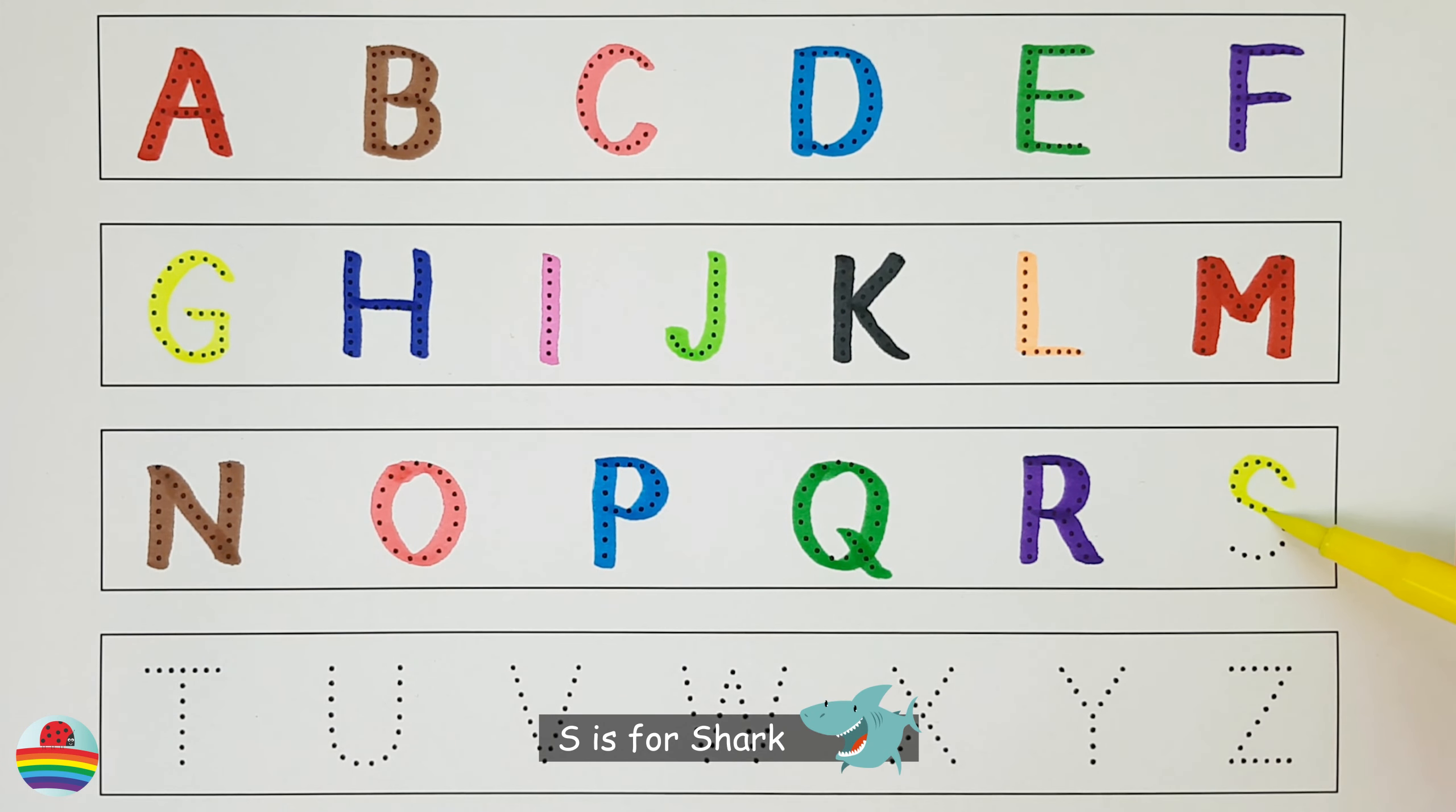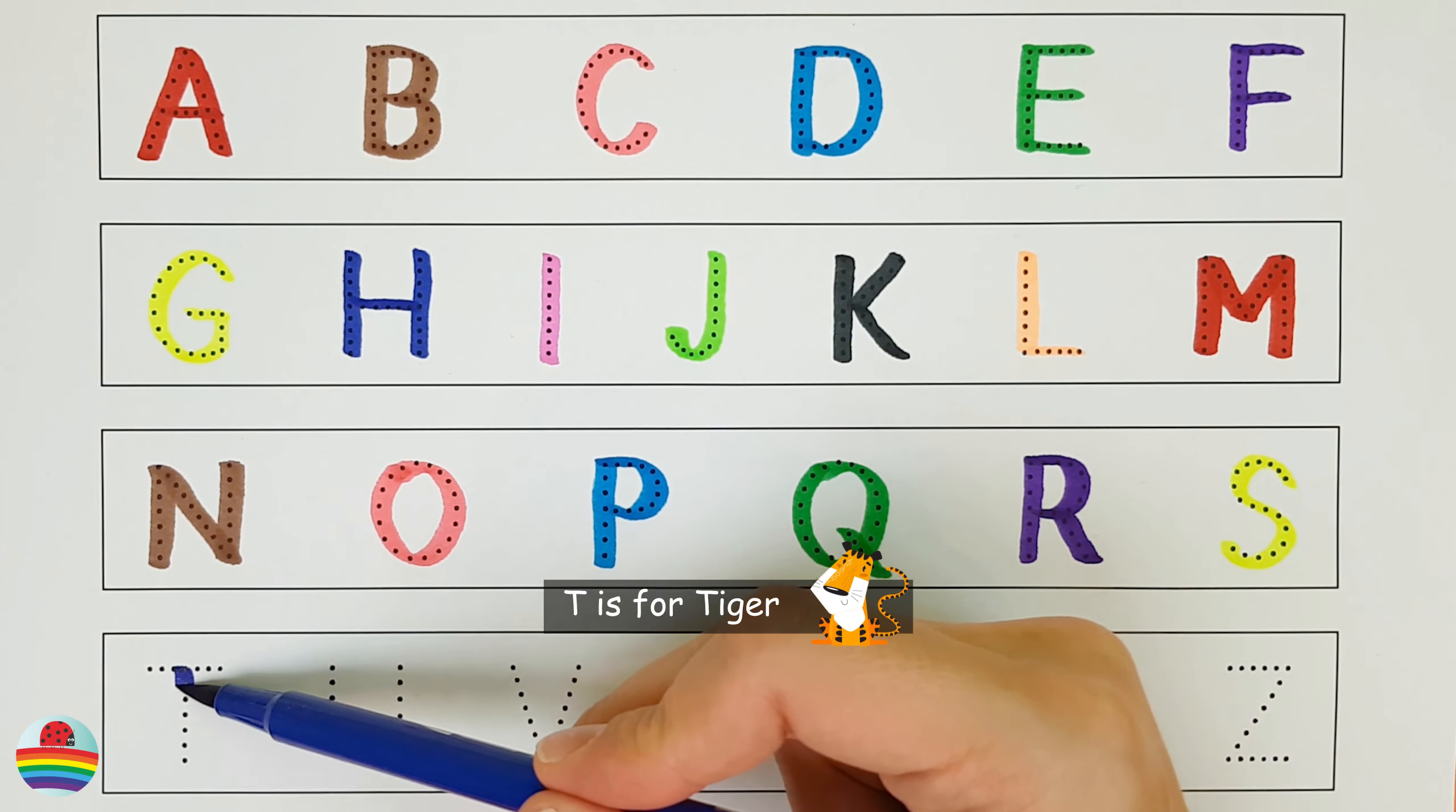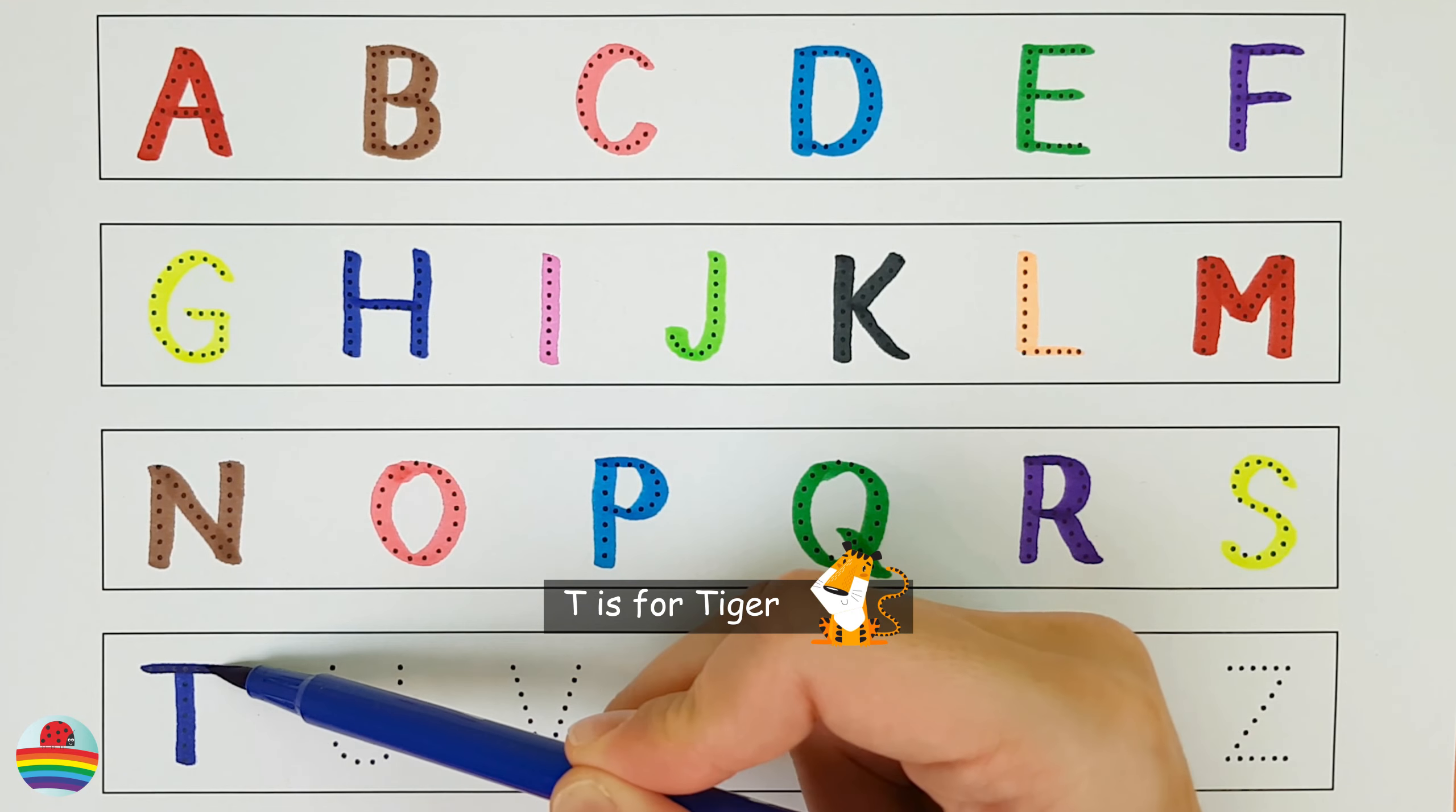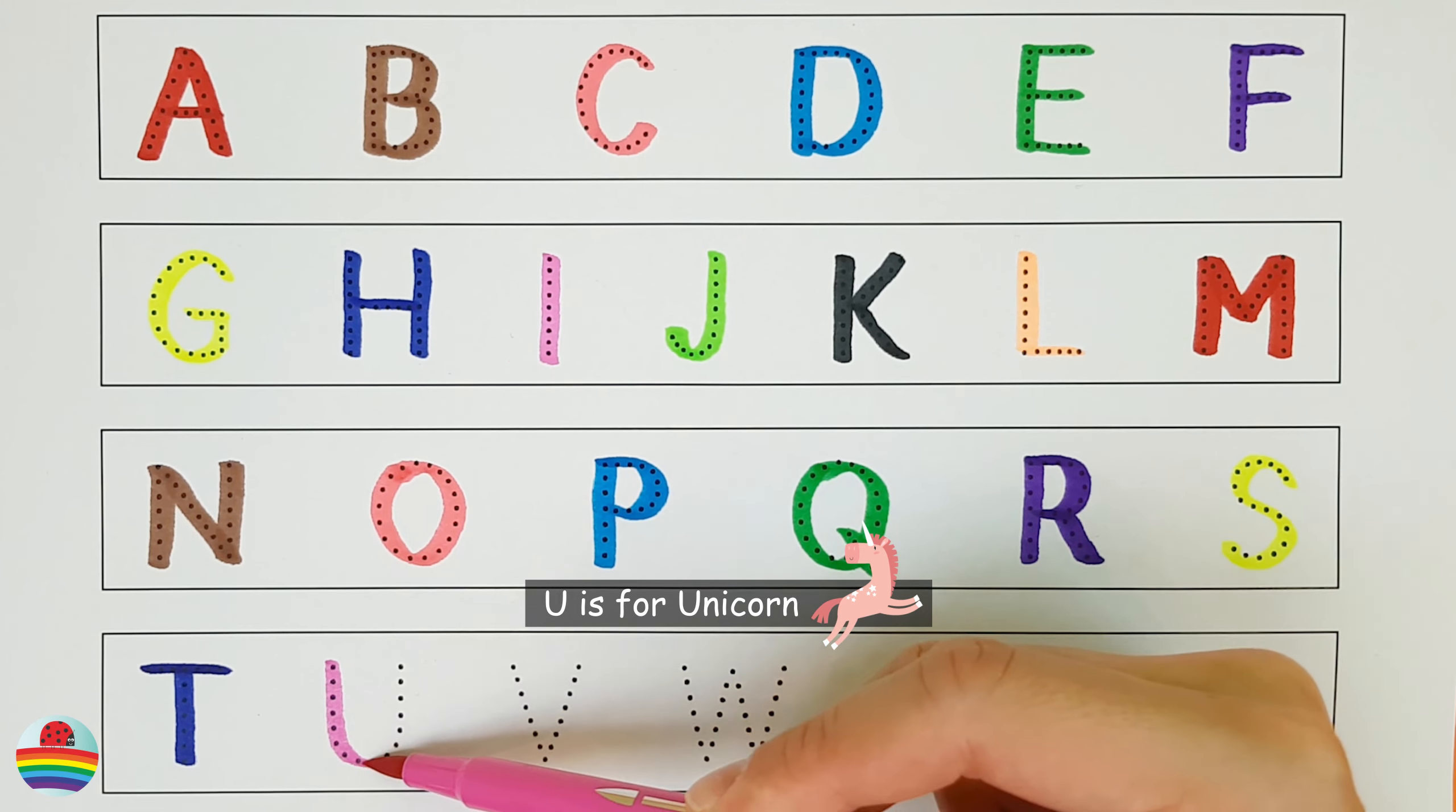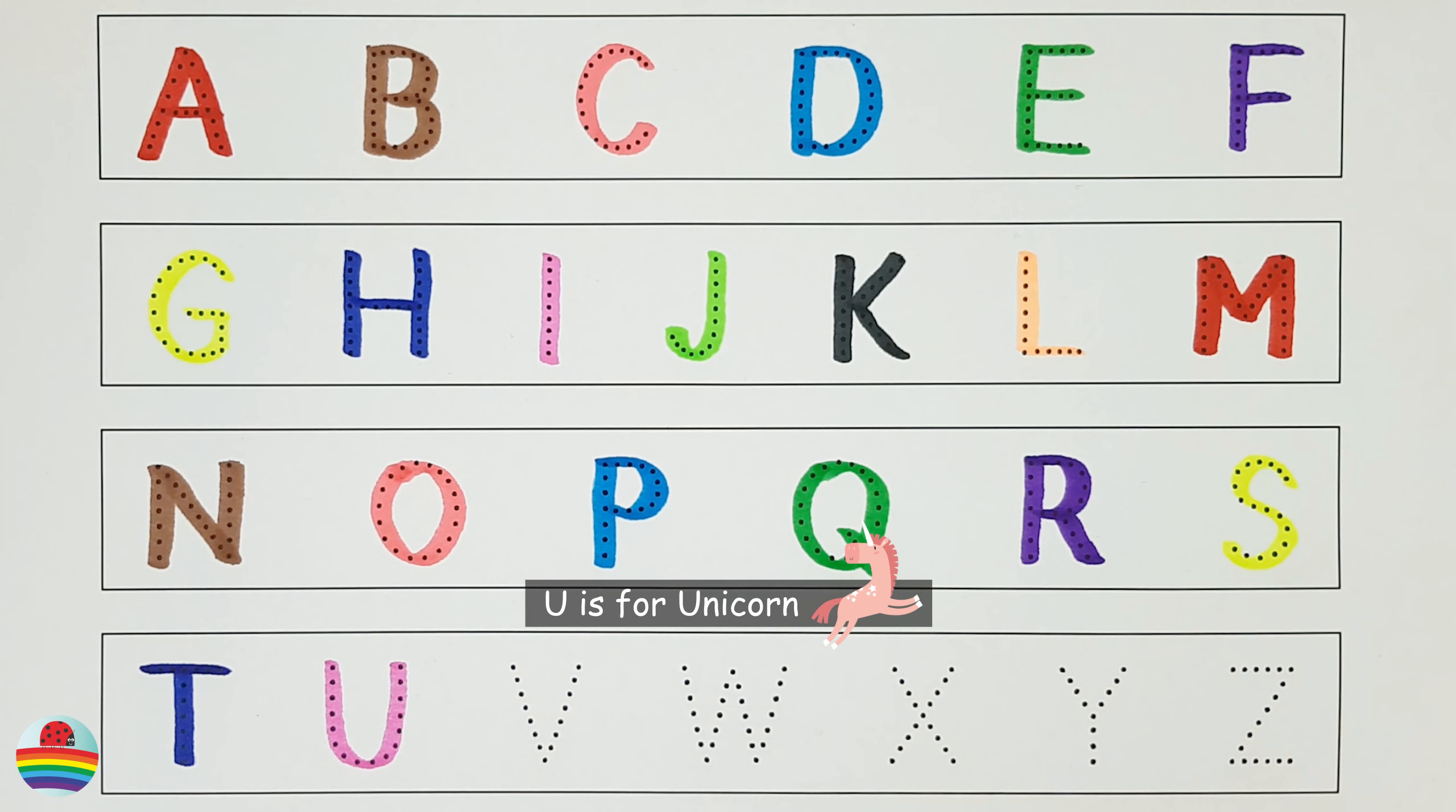S. S is for Shark. S. T. T is for Tiger. T. U. U is for Unicorn. U.